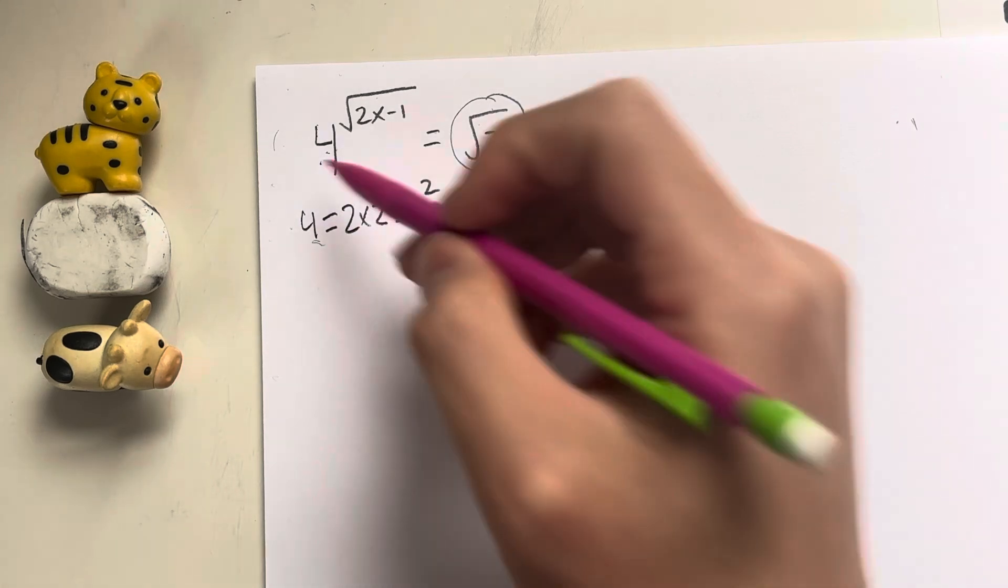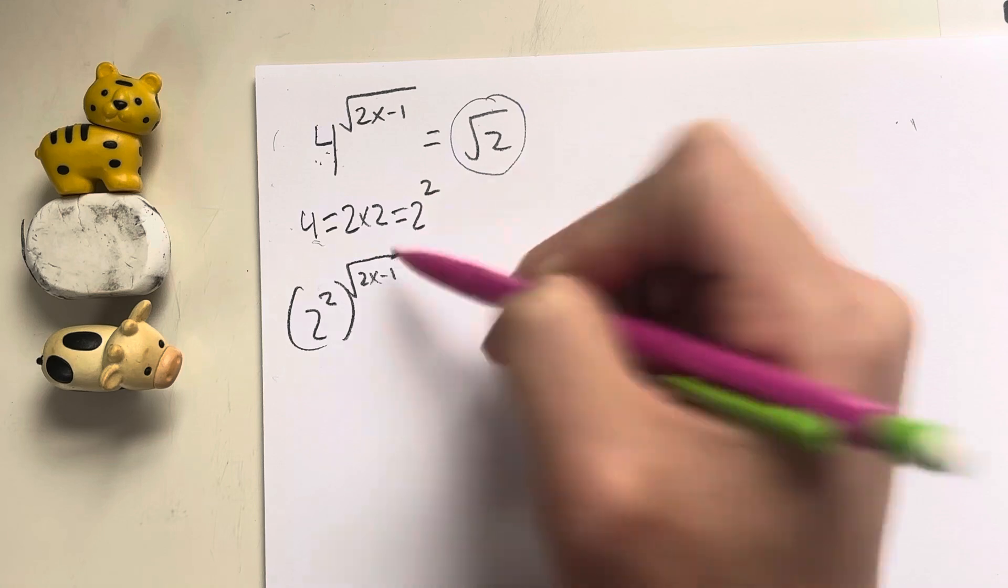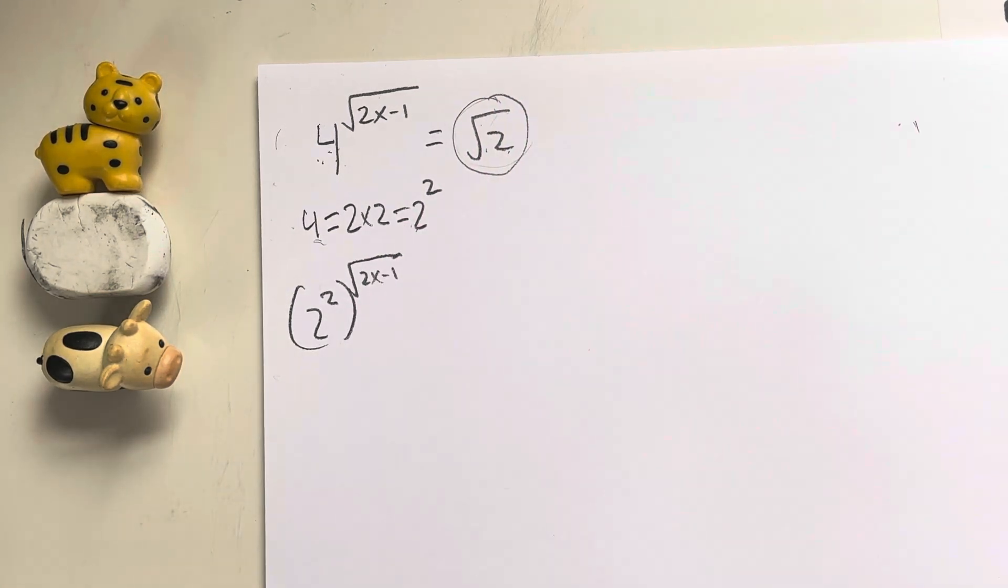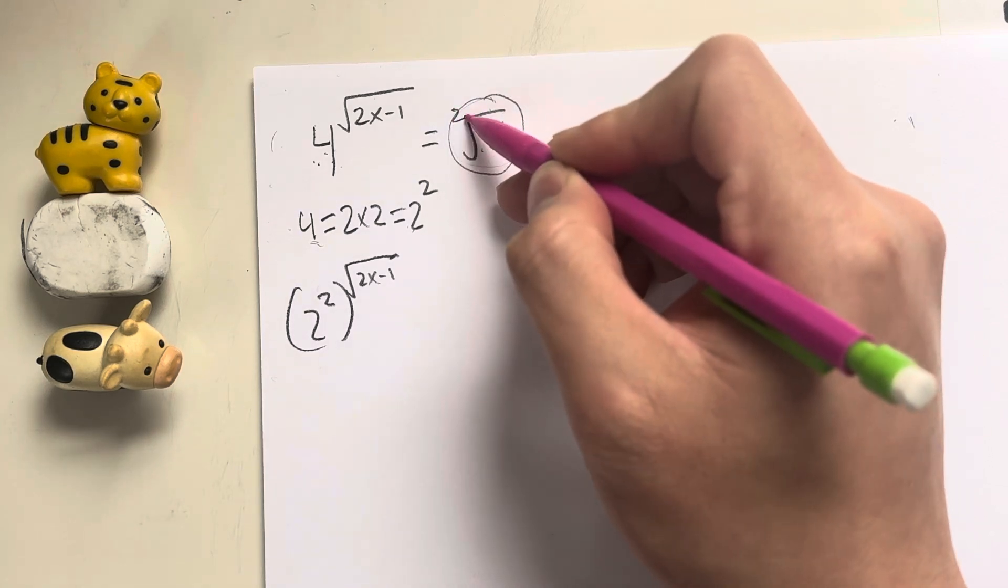So I'm going to have to rewrite this as 2 to the second power, to the square root of 2x minus 1. Now, how can I convert the square root of 2 into 2 to the something power? We have to remember that there technically is a 1 over here, and there's an imaginary 2.